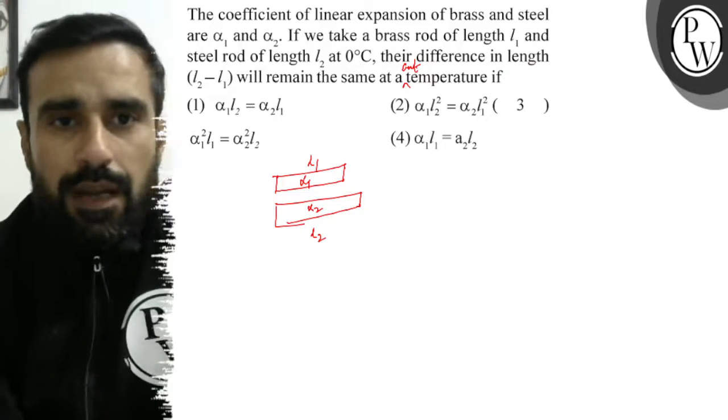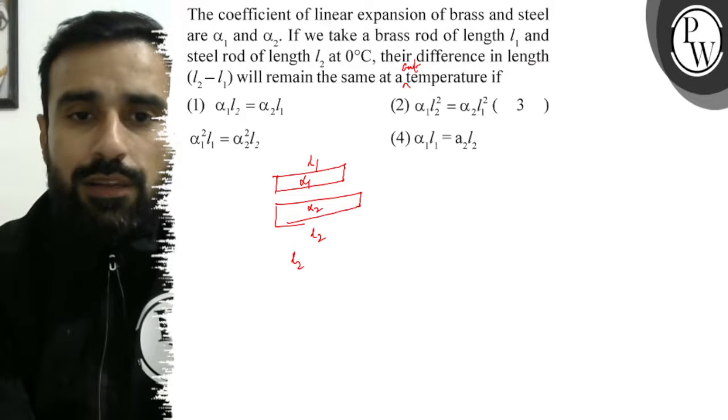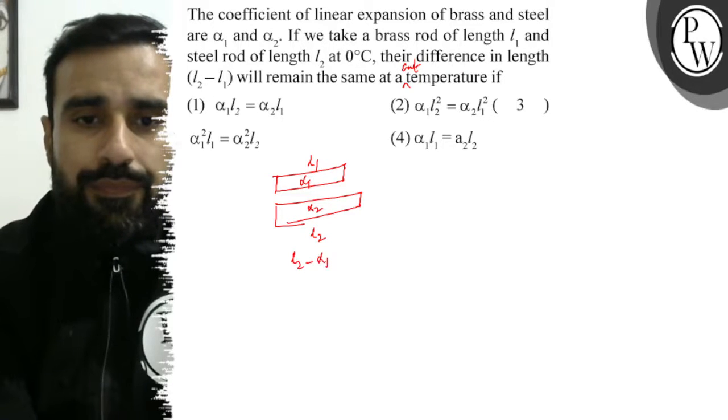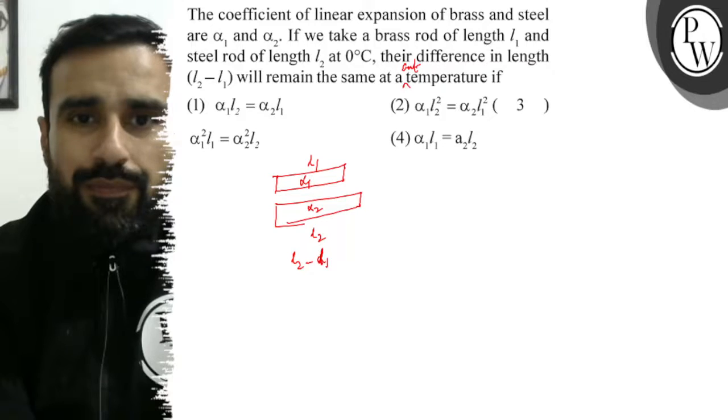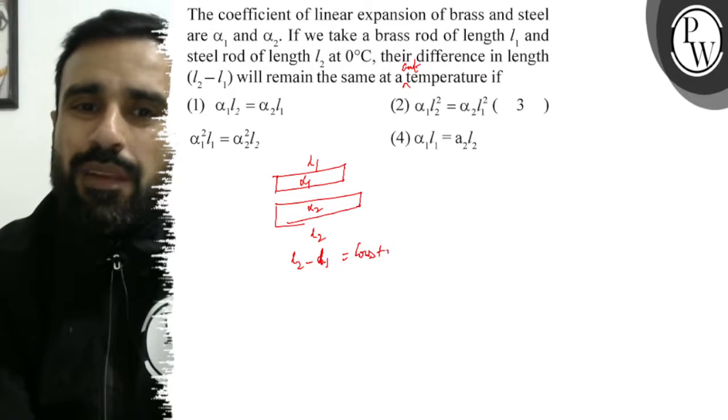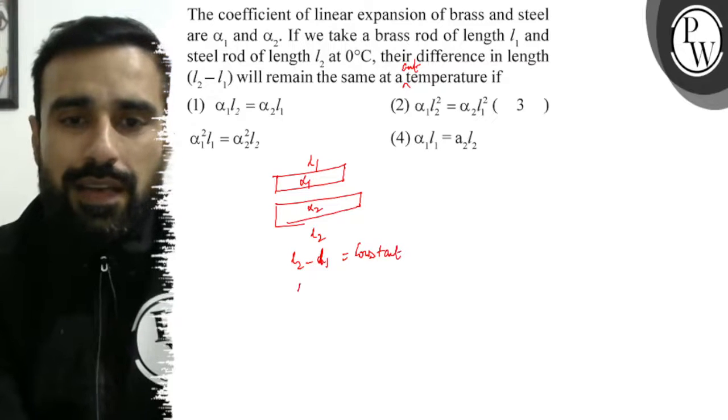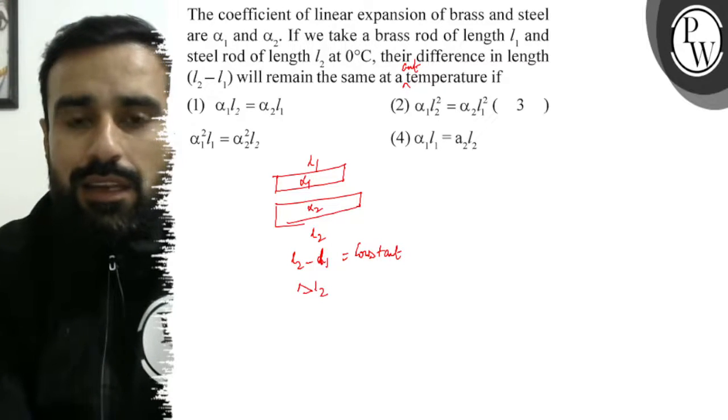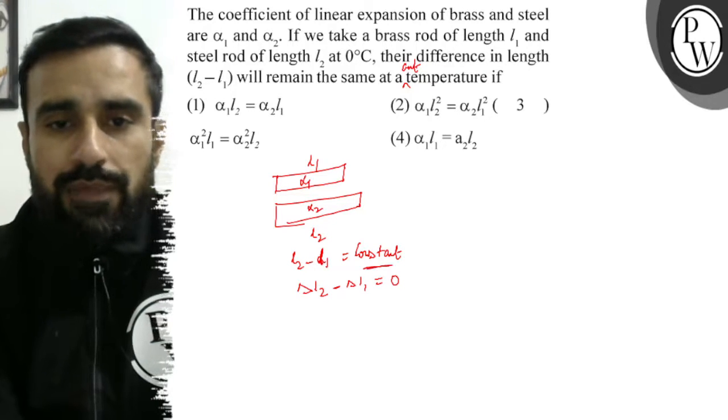The difference in length, L2 minus L1, must remain constant. According to the question, this must remain constant. This means delta L2 minus delta L1 must equal 0, because if it's constant, the differential element will be 0.